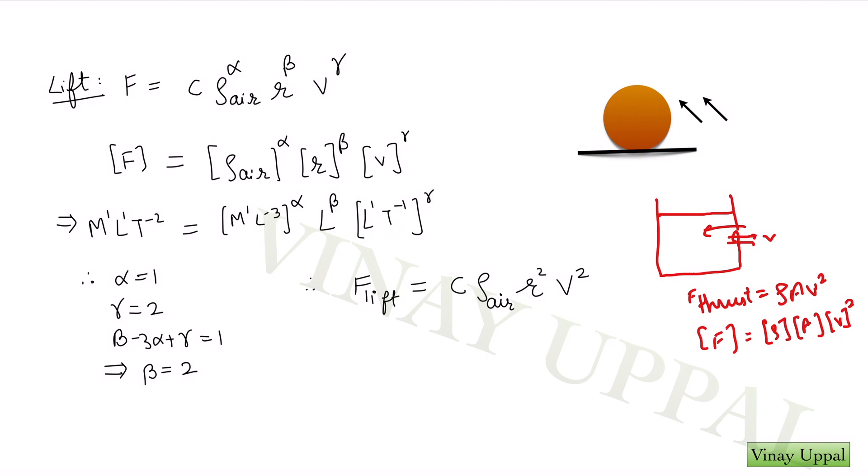You should be able to very easily see that M raised to 1 on the left hand side will correspond to M raised to α. So α is equal to 1. Similarly, for time T raised to minus γ will correspond to T raised to minus 2, γ is 2, and then do the same thing for the length and you solve for β and you get the value as 2. So this is my final expression for the lift force which is what we expected from the thrust formula ρAv² where A is area, here it will correspond to r² exactly what we get here.